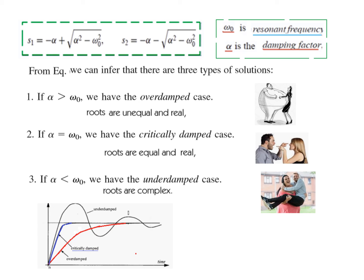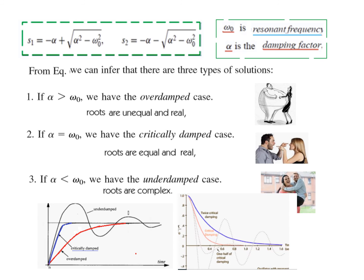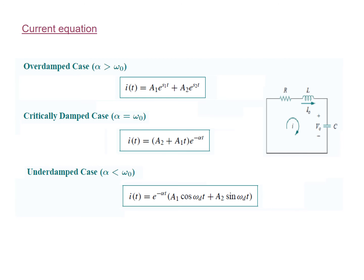The graphical representation shows: the overdamped case takes more time to settle; the critically damped case settles immediately; and the underdamped case oscillates and then gradually dies down. This applies for both charging and discharging. Based on these three cases we have three different equations to keep in mind.